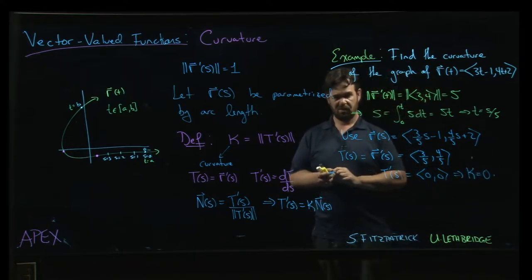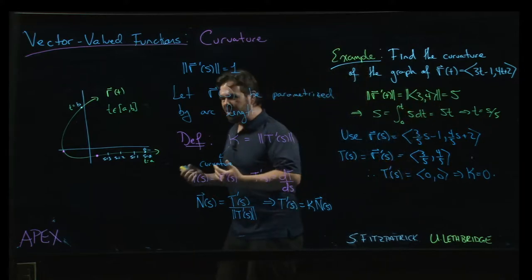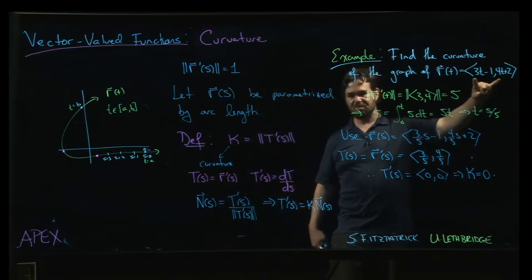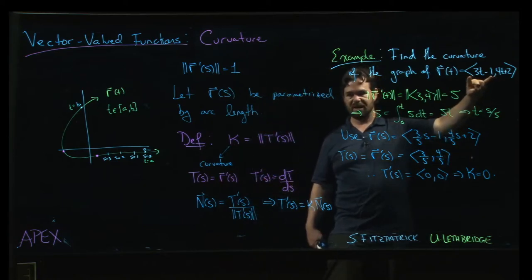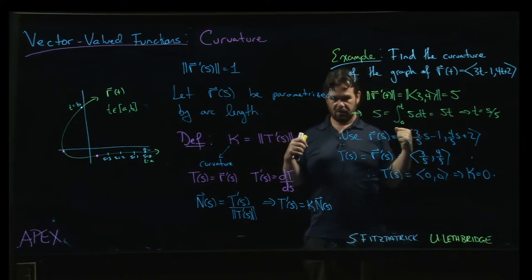It's not very interesting. But, I mean, intuitively, we probably should have predicted that from the beginning because we know that the graph is a line. It's a straight line. How much does a straight line curve? Not at all. It's straight. So 0 curvature makes perfect sense here.